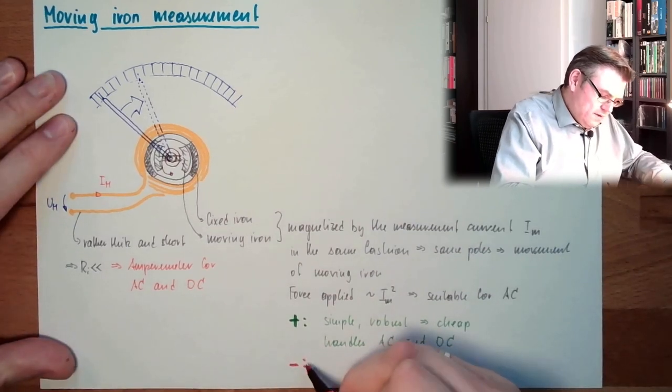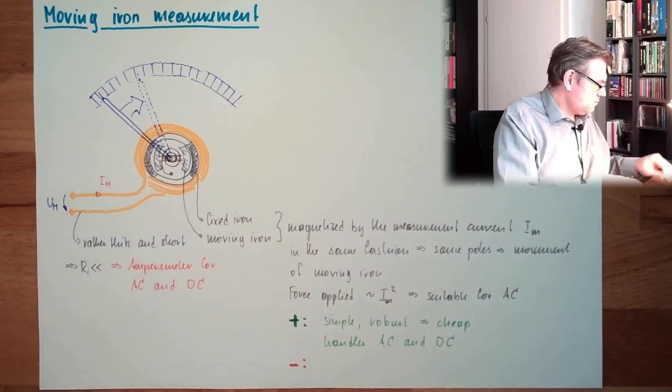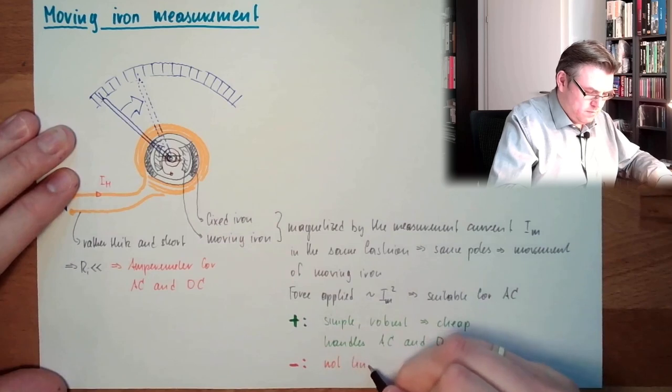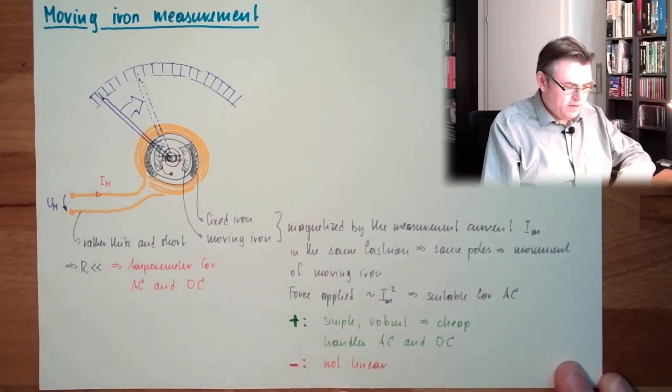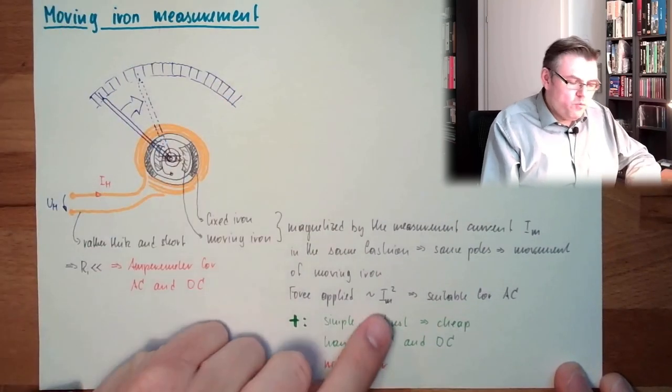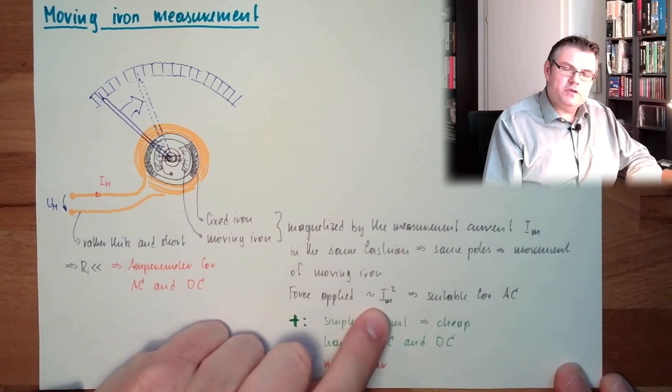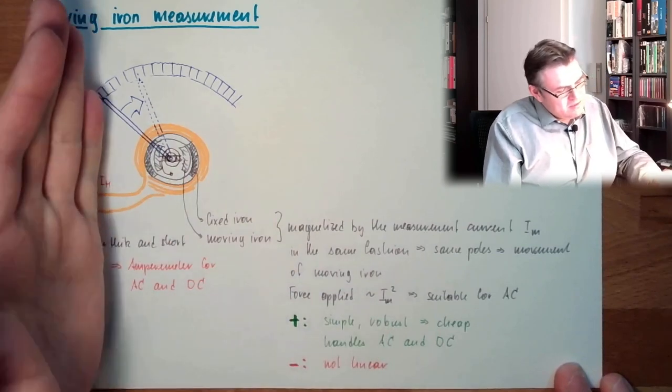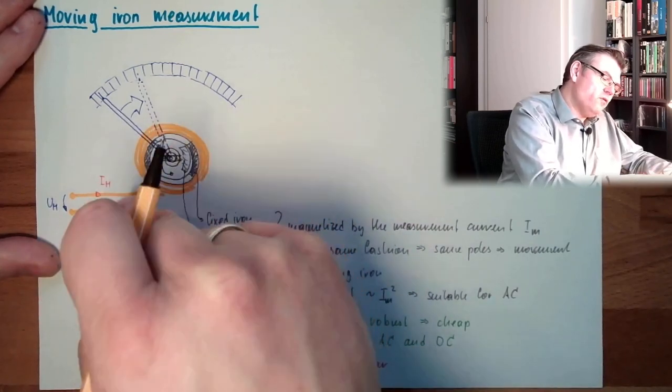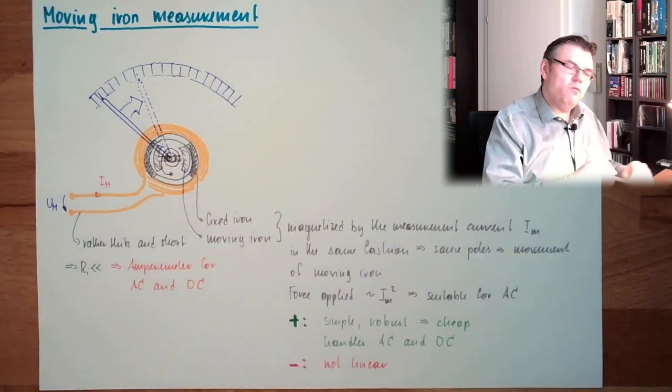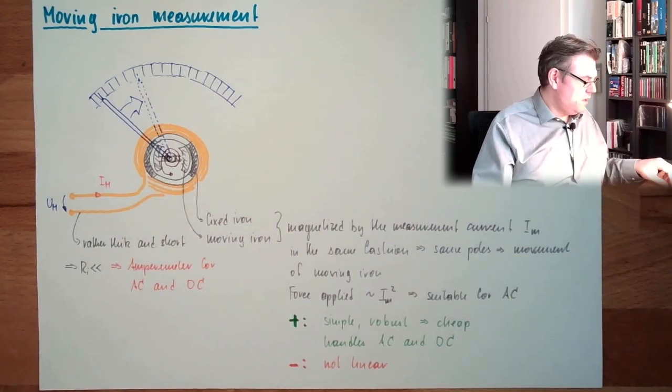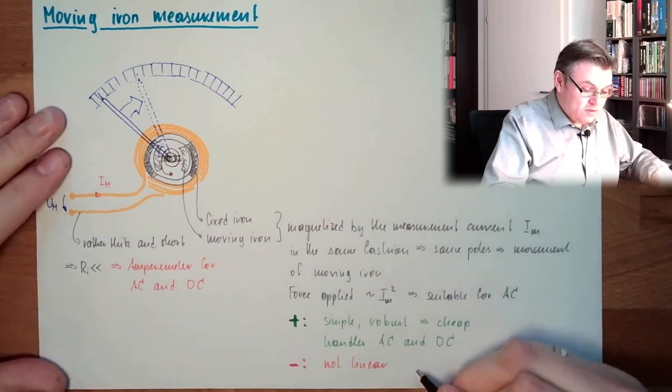What is the downside? Non-linear. Non-linear, this means the scale has to be non-linear fashion. We are proportional to IM squared, so this has to be some sort of squared, depending a little bit on the magnetizing curve also from this material and so on. There is a lot of know-how inside, however it's not linear and not that accurate.